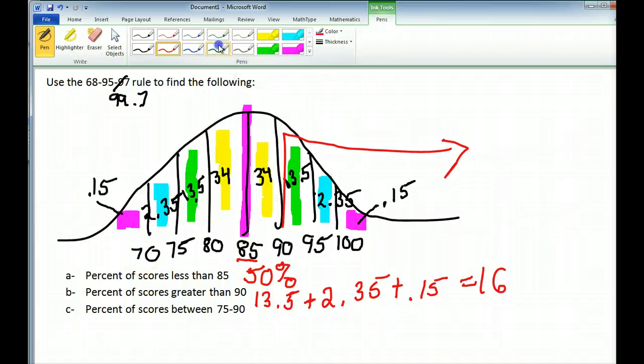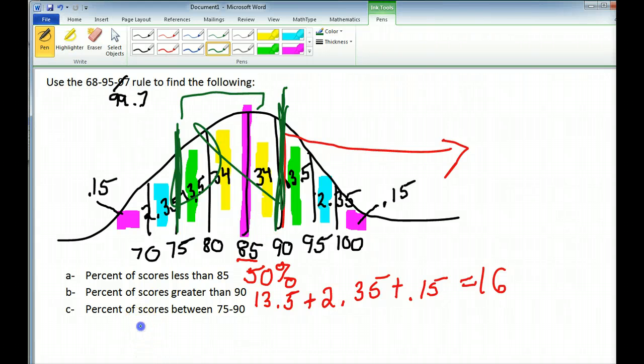Lastly, the percentage of scores between 75, I'm going to color that green, and 90. Oh, my pen got a little too happy there. 75 and 90. Now I can clearly see what's in between and add up the corresponding percents. 13.5 plus 34 plus 34 gives me a percentage of 81.5.